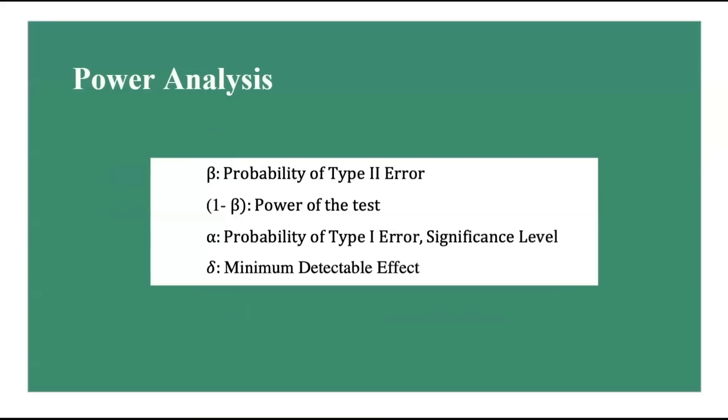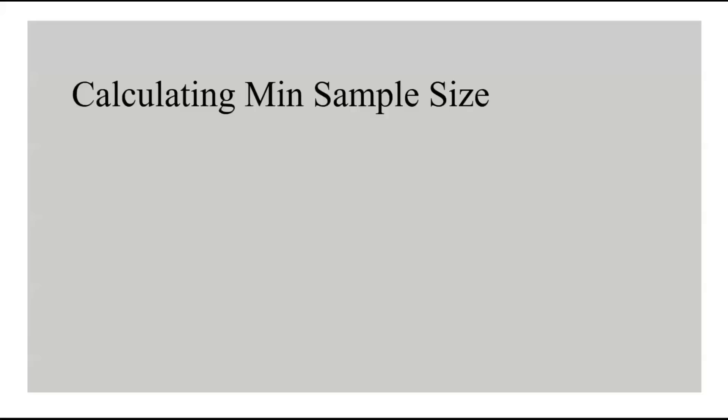A popular reference for the parameters involved in power analysis is: 1-beta for the power of the test, alpha for the significance level, and delta for the minimum detectable effect. To ensure results are repeatable, robust, and generalizable to the entire population, we need to avoid p-hacking, ensure real statistical significance, and avoid biased results. We must collect enough observations and run the test for a minimum predetermined time. Before running the test, we need to determine the sample size of the control and experimental groups using the defined power, significance level, and minimum detectable effect from power analysis.